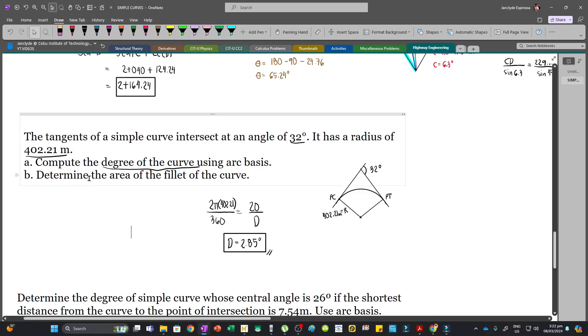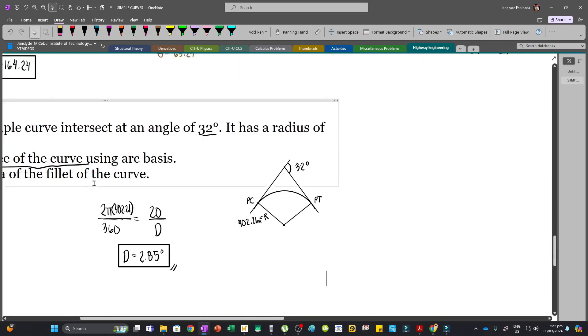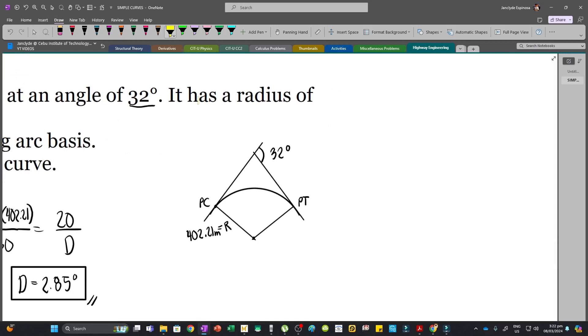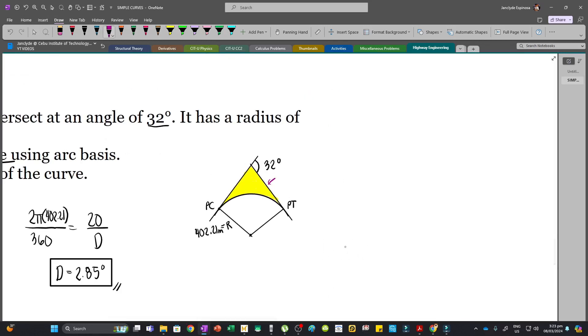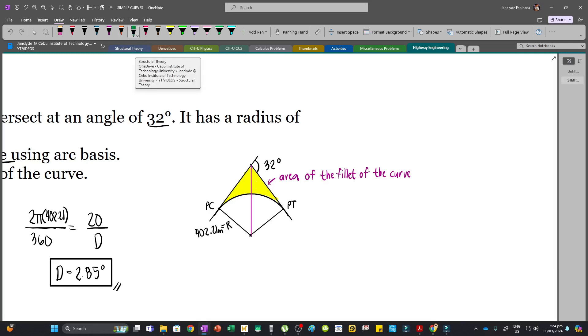Now for the next question we have to determine the area of the fillet of the curve. Now if you're asked this question, the fillet of the curve is actually this area. Let's color it yellow, so this is the area of the fillet of the curve. Now how are we going to get this area?